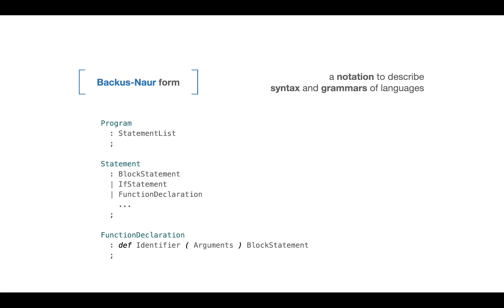Let's look at one more example. The main entry point is called program, and the program consists of a statement list. The statement list is a list of statements, and each statement can be a block statement, if statement, function declaration, etc. We recursively define each production. For example, a function declaration is defined as the 'def' keyword followed by the function name (identifier), followed by arguments in parentheses, followed by the function body which is a block statement. That's the BNF grammar we'll follow when building our manual recursive descent parser.